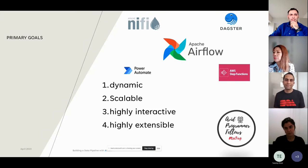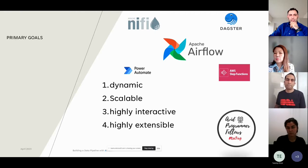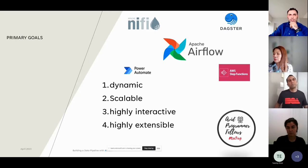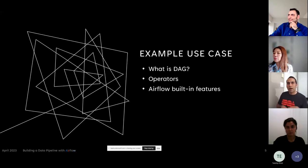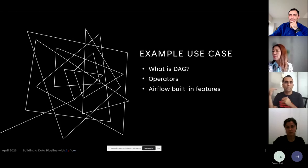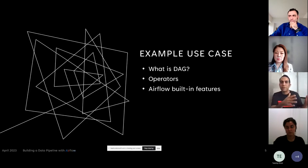We're always interested in real-world examples of how technology is used to solve problems. Can you share how Airflow has been implemented at EA or other companies you've worked with? So at EA, for example, we have a data pipeline that involves collecting player data from various data sources, transforming it, and storing it in a centralized data warehouse for analysis. The pipeline includes tasks such as data extraction, data transformation, and data loading, and also involves running machine learning models on the data to generate predictions and recommendations for players.